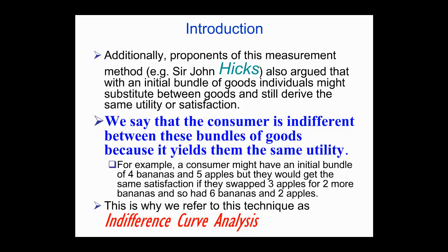An example on this slide shows that a consumer might have an initial bundle of four bananas and five apples. Obviously you would want more apples and more bananas — having six bananas and six apples would be better. But with the initial bundle of four bananas and five apples, it might be possible that the individual would get the same satisfaction if they swapped three apples for two bananas, ending up with six bananas and two apples. Six bananas and two apples gives them the same utility as four bananas and five apples. You just swapped two bananas for three apples, and therefore you're indifferent in terms of the satisfaction you get. This is why we refer to this technique as indifference curve analysis.